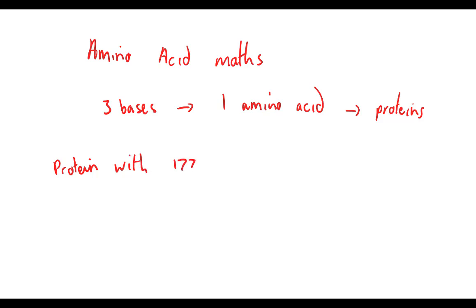What about some amino acid maths? Remember, it takes three bases to code for one amino acid. The amino acids then join to form proteins. Let's say, for example, we had a protein with 177 amino acids. How many bases would it take to produce that? Well, remember, three bases codes for one amino acid. So you would have to take 177, multiply it by 3, and that means it would have taken 531 bases to code for that.